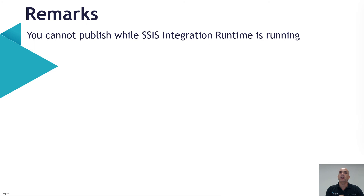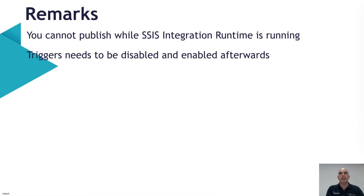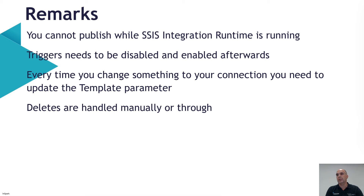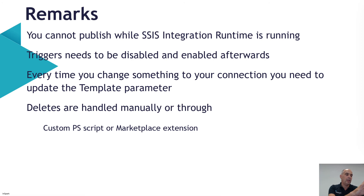Is everything working fine? Not necessarily — there are a couple of things to take care of. If you're using SSIS integration runtime, make sure you create a PowerShell script to stop the integration runtime before deployment, do the deployment, then start it again. The same applies to triggers — you need to stop triggers before deploying to the next environment, then enable them afterwards. Also, every time you change something in your connection, you need to update the template parameter file as well. All of these are handled mainly through a PowerShell script or a marketplace extension.